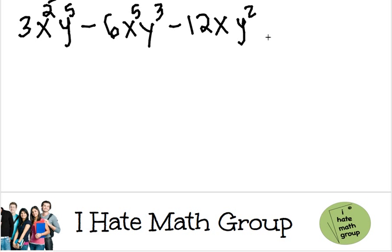Okay, so in order to factor this, I need to find the greatest common factor. Well, I'm going to start with the numbers 3, 6, and 12. I see here that the greatest common factor is just going to be 3 because 3 is the only number that I can divide every single one without getting a remainder.